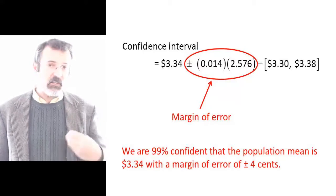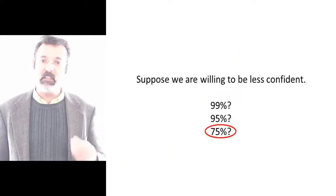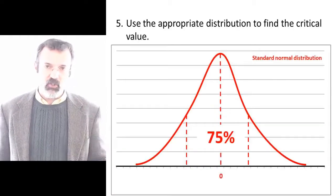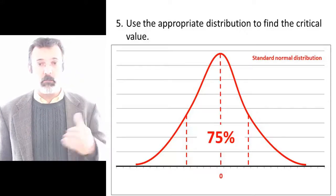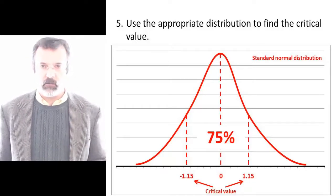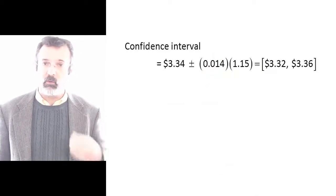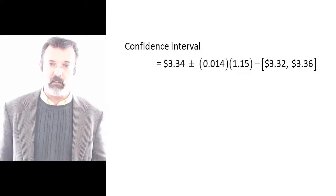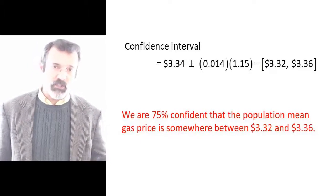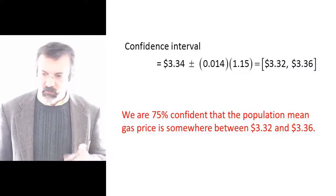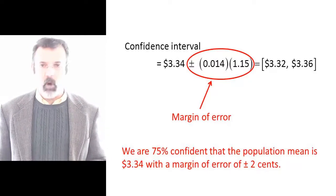Now there is a trade-off to be had here. I can make a statement that has a smaller margin of error, but in doing so I must give up confidence. For example, suppose I am willing to make a 75% confidence statement. I look at a standard normal distribution and ask: what critical values divide my distribution so that 75% of the distribution is in the center? Those numbers are plus and minus 1.15. Using these critical values, my sample mean is 3.34 plus or minus the standard error 0.014 multiplied by the new critical value 1.15. This gives me a range of $3.32 to $3.36. So we are 75% confident that the population mean price of gas is $3.34 plus or minus a margin of error of 2 cents.